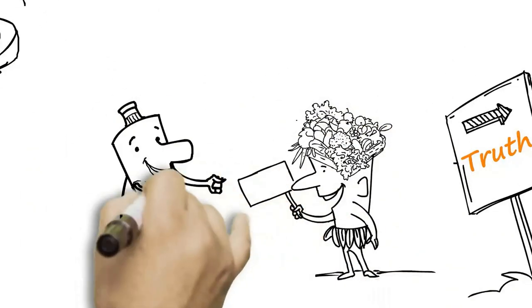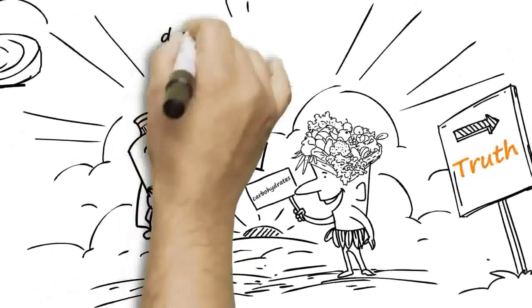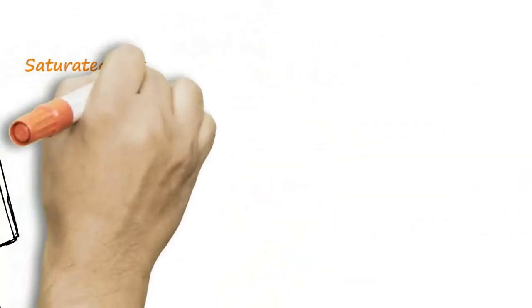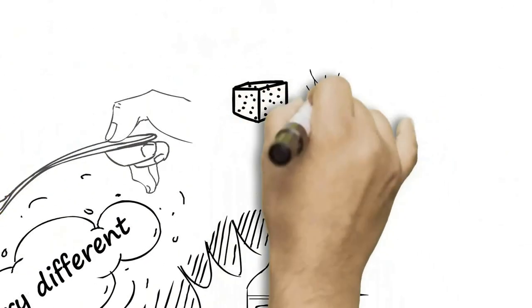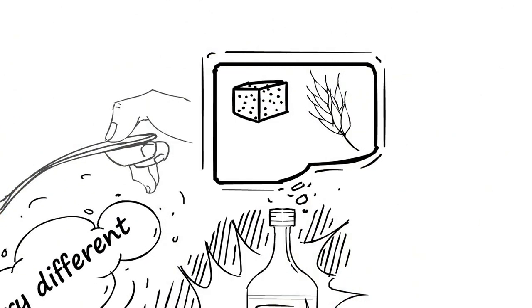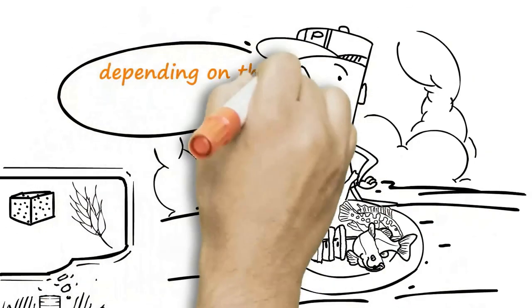We all know there are major differences in the relative health benefits for fats and carbohydrates, depending on the source or type. Saturated fats and fish oils are very different, just as sugars and soluble fibers have diverse nutritional qualities. Proteins also have dissimilar nutritional values, depending on the source and type.